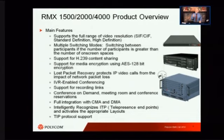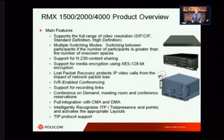Video switched mode is a very easy way to do distribution of calls, but there are some downsides. All calls have to be at exactly the same speed with the same resolution, meaning all systems calling in need to be basically the same. Sometimes we can do that, but a lot of times there are mixed manufacturers within one company. Because of that, you'll probably need transcoding and something called continuous presence. Continuous presence allows up to 16 people on one screen at one time, which works out very nicely.